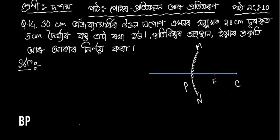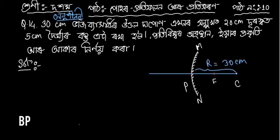Hello students, you have to solve question number two. Question number 14 is question number one. The question involves a concave mirror with a hole, 30 cm distance. The mirror has a radius of 30 cm, and the object is at 20 cm, with dimensions of 5 cm height and 20 cm.